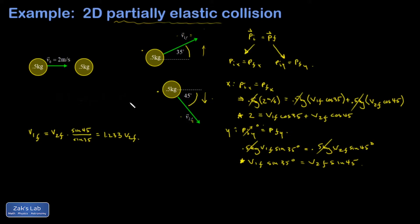Then I'm going to take that value of V1 final and sub it into my first equation. So I end up with 2 equals 1.233 V2 final cosine 35 plus V2 final cosine 45. I'm going to factor the V2 final out of the right-hand side and smash together all the leftover numbers. And I end up with 2 equals V2 final times 1.717.